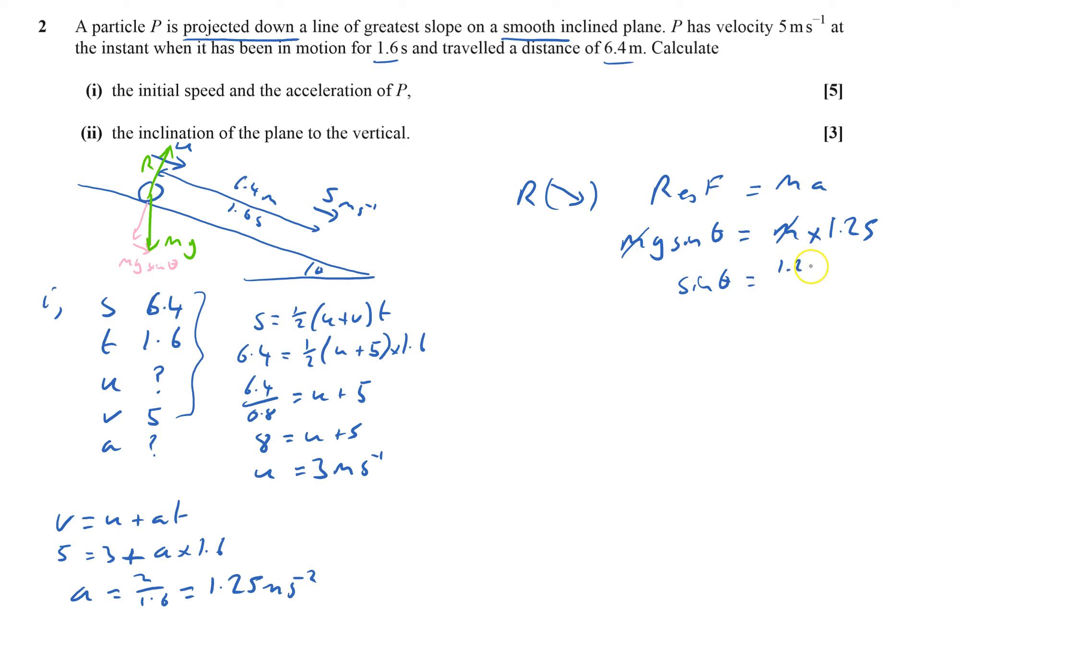That means sine theta equals 1.25 over 9.8, which is 0.1275102, and so theta equals 7.32809 degrees to the horizontal.